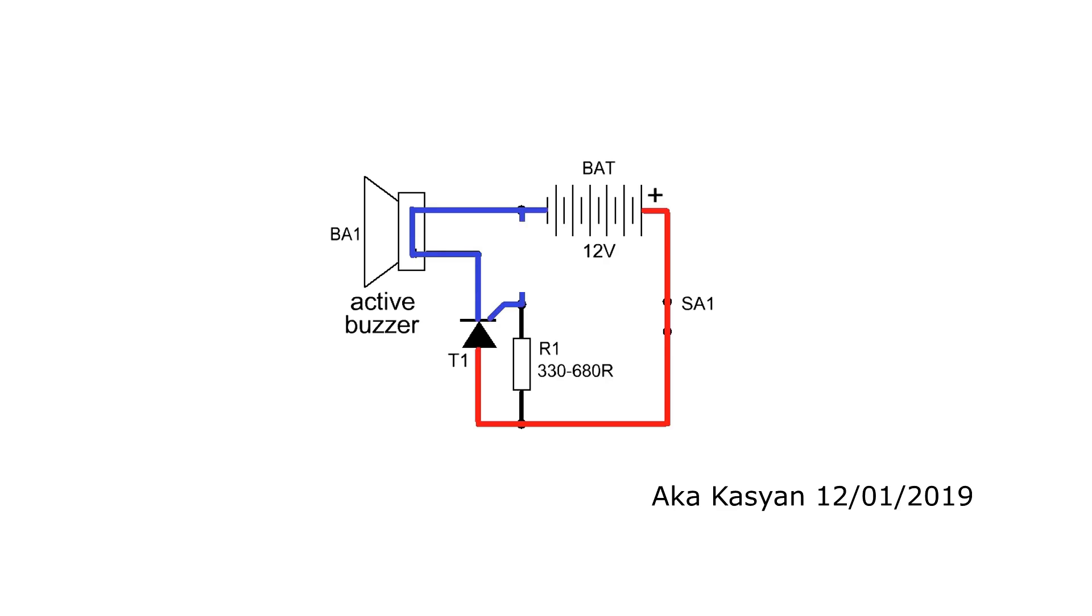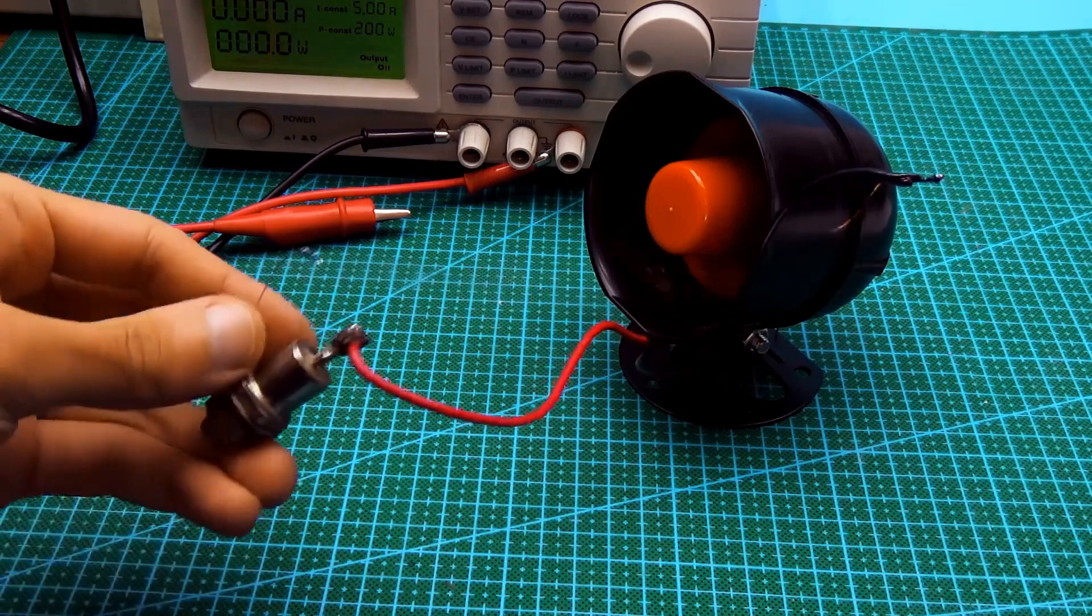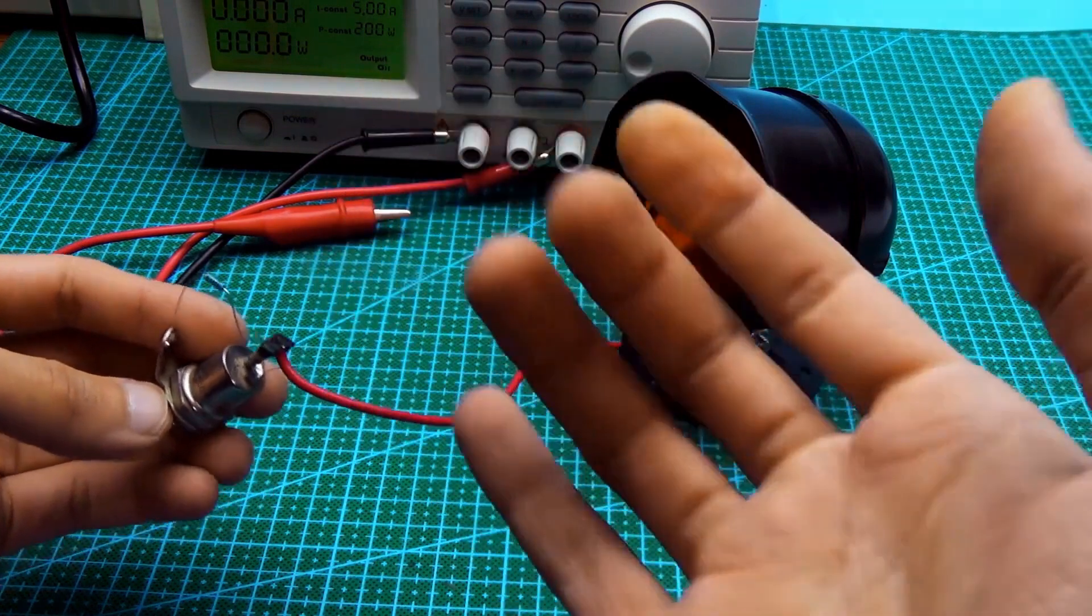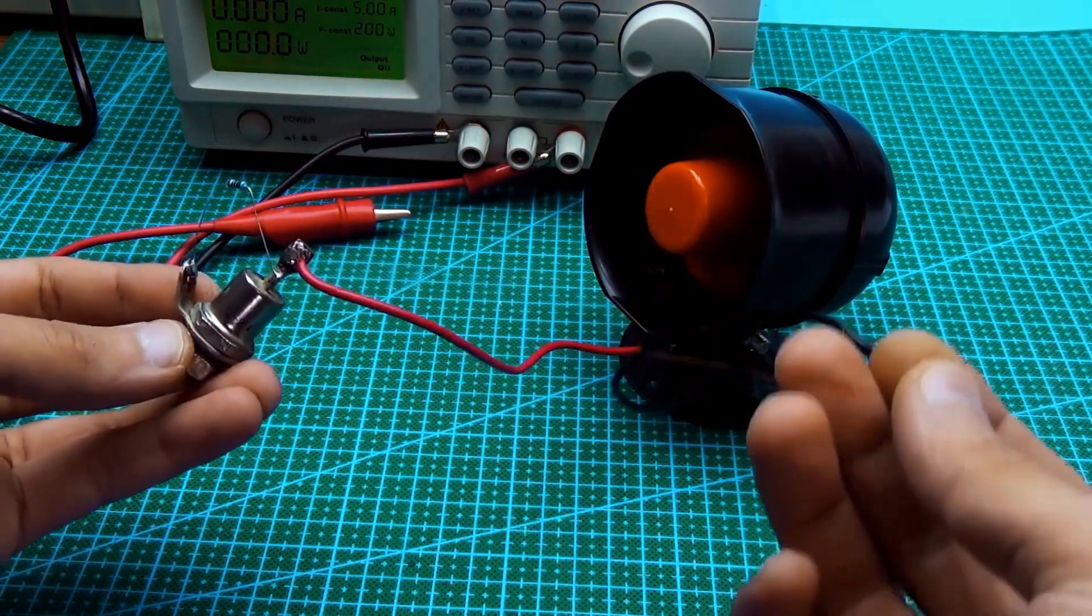When the wire breaks, an unlocking voltage is applied through resistor R1 to the control electrode of the thyristor, and as a result, it activates, triggering the alarm. Since the thyristor is non-latching and also in a direct current circuit, the thief will not be able to disable the alarm, even if they restore the broken wire.